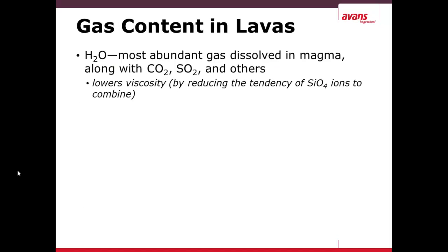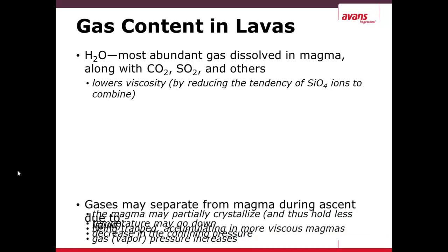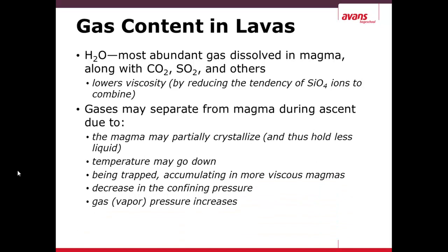Gas content in lavas: the most abundant gas is water vapor (steam), as well as carbon dioxide (CO2) and sulfur dioxide (SO2). Gases may separate from magma during ascent because the magma will partially crystallize and have less liquid. Temperatures will go down, and being trapped, gas will accumulate. Confining pressure decreases while gas pressure increases, and because of this, there could be a very large eruption.